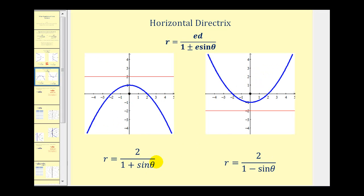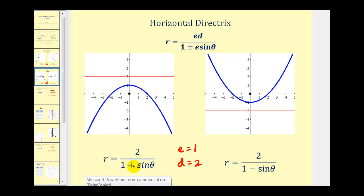Now let's take a look at the same equations with sine theta. The eccentricity is equal to one, because the coefficient of sine theta is equal to one, and d is equal to two again. Because the equation contains sine theta, we have a horizontal directrix y equals positive two here, and a horizontal directrix y equals negative two here. Remember on the unit circle, sine theta is equal to y. If it's a parabola, it will open up or down along the y-axis. If it's an ellipse, the major axis will be along the y-axis. And if it's a hyperbola, it'll open up and down along the y-axis, if the equation contains sine theta.